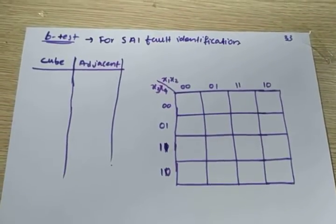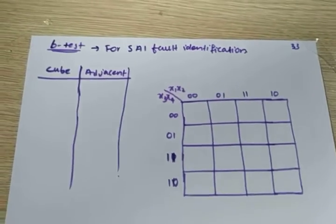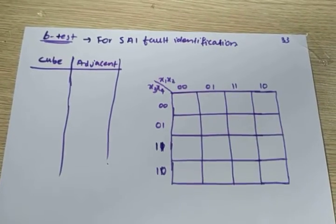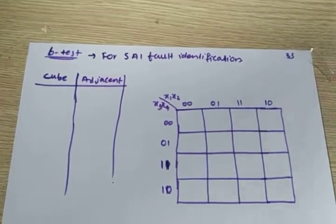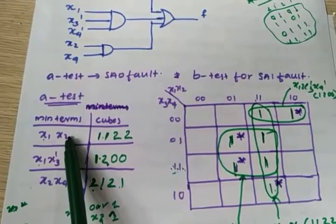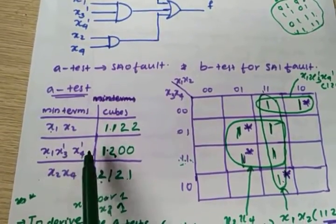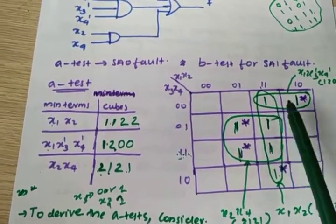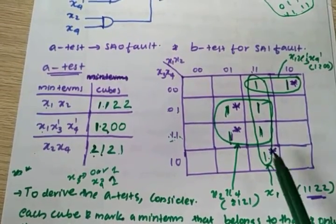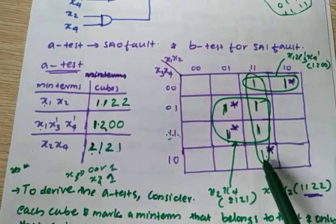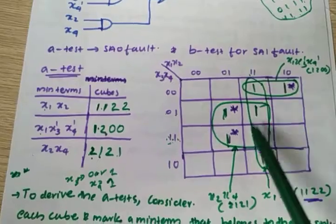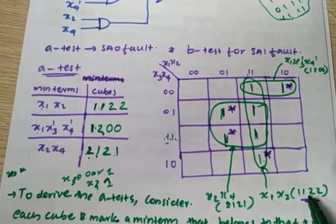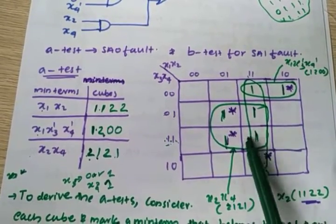So this is the procedure you have to follow for stuck-at-one fault. What you have to do is first write the cubes and the corresponding adjacent cubes. Our cubes are: x1·x2 is one cube, x1·x3'·x4' is another cube, and x4·x2·x4 is one cube. So my first cube is x1·x2 — written as 1 1 2 2. This is the first cube, formed by combining four minterms.